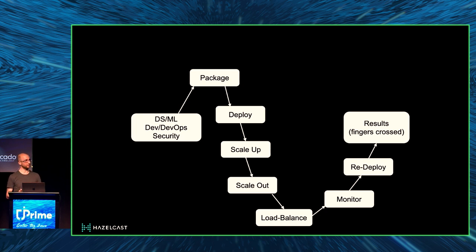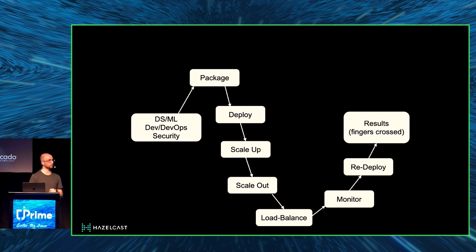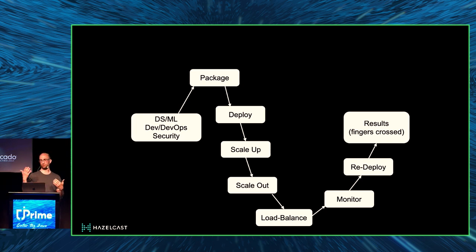Obviously, redeployment is very critical because it might affect your end users. What we're trying to do is redeploy the application — whether it's the same code or different code — in real time, without stopping the microservice application. We want to switch between microservices based on whatever factors you have. For example, if you're using machine learning models and want to switch between models without taking the application down, you want some kind of live deployment in real time.